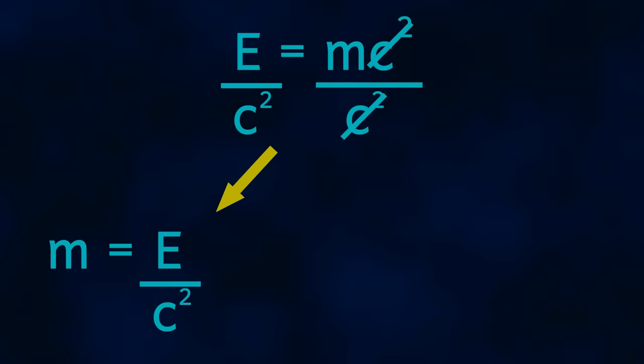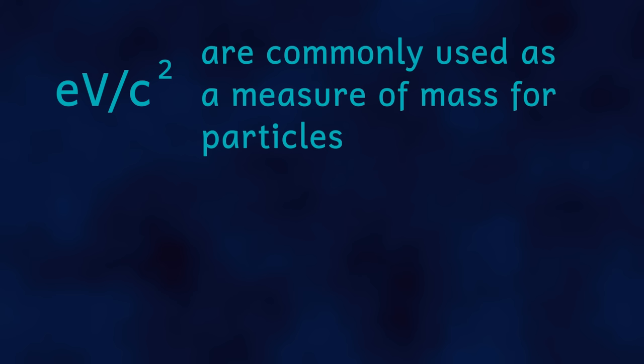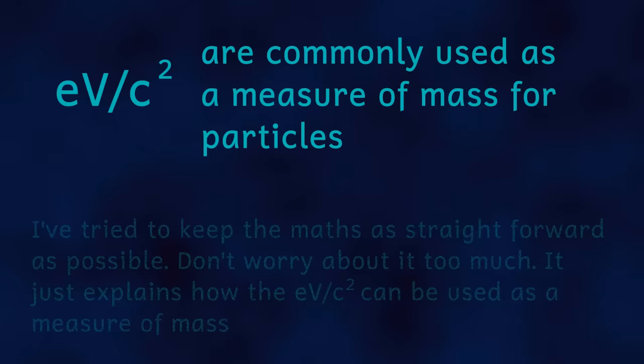The electron volt is actually a measure of energy. So I can put this into the equation here. We can now see that mass is equivalent to electron volts divided by C squared, or in other words, electron volts per C squared. When I'm talking about very small masses, in other words, the masses of particles, we often use electron volts per C squared as a unit of mass equivalence. So I hope that makes sense, and I hope I haven't mangled the physics too much.